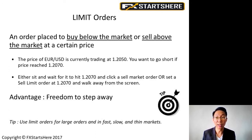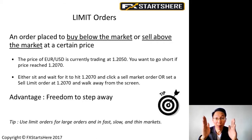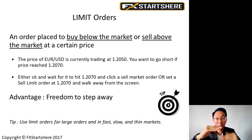Next we move on to limit orders. A limit order is an order placed to buy below the market or sell above the market at a certain price. In this example, EURUSD is currently trading at 1.2050 and you want to go short if the price reaches 1.2070. You can either sit and wait for the price to reach 1.2070 and click a sell market order, or you can set a sell limit at 1.2070 and walk away from the screen. The advantage of using limit orders is the freedom to step away — you don't have to be watching the screen waiting for the price to hit your entry.